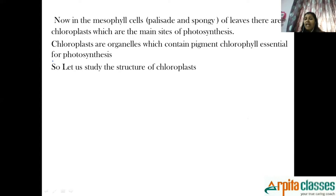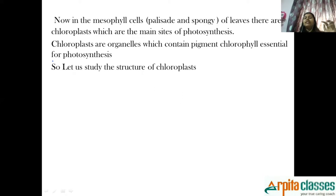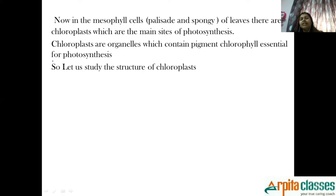Why should light reaction take place in the grana and not other regions of the chloroplast? Because for light reaction to take place, sunlight is required, and that sunlight is going to be absorbed by chlorophyll. Since chlorophyll is present in the thylakoid or the grana, that is why light reaction takes place in the grana.